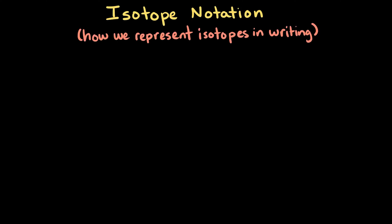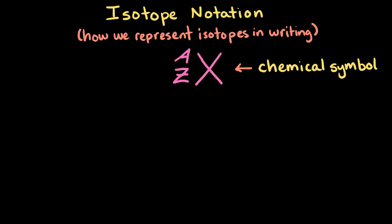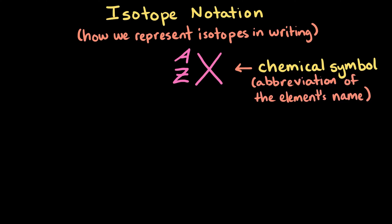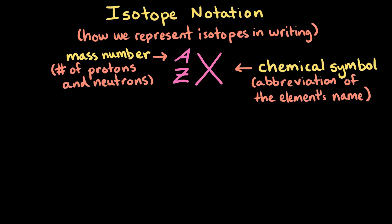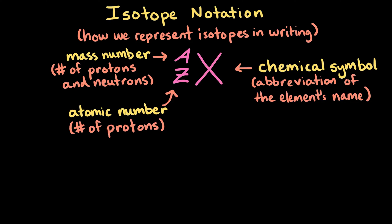Next, let's dive into isotope notation, or how we represent isotopes in writing. When describing different isotopes, you'll often see this notation, where X is the chemical symbol — an abbreviation of the element's name — A is the mass number, the number of protons plus neutrons, and Z is the atomic number, the number of protons.